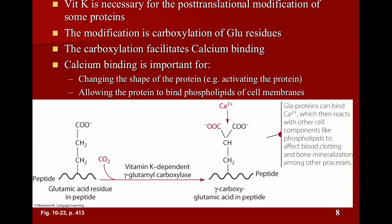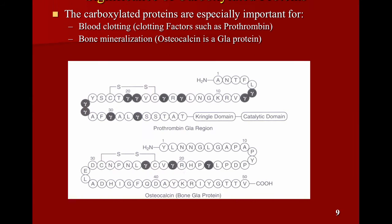We said the main functions of vitamin K is it actually is involved in post-translational modification of some proteins and this is where the glutamate residue is converted to what we call a GLA residue and that's the addition of an additional carboxylic acid group to the side chain of glutamate, making it GLA, allowing it to then bind calcium and then that GLA protein can then react with other cell components and that's like phospholipids to affect the blood clotting and bone mineralization among other processes.